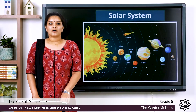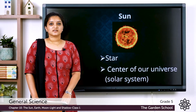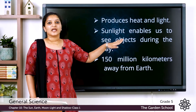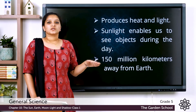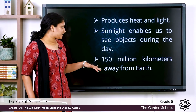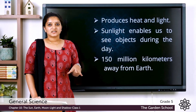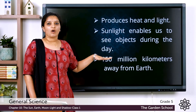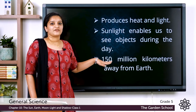Now let's learn about our star, the sun. The sun is a star and is the center of the solar system. It produces heat and light for the entire solar system. The sunlight enables us to see objects during the day and the sun is 150 million kilometers away from the earth.